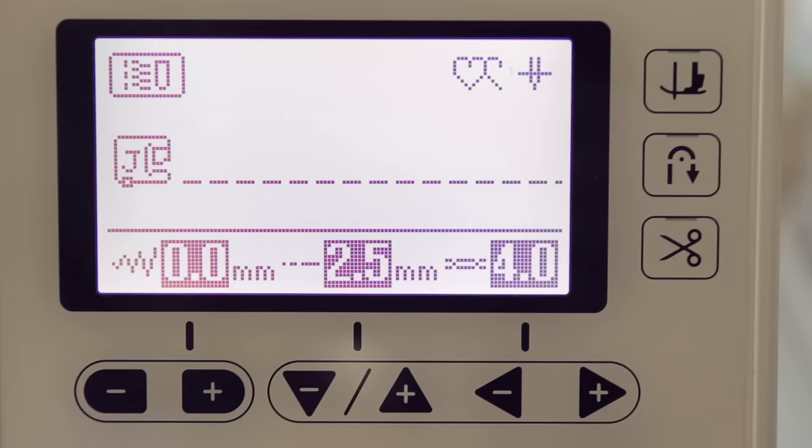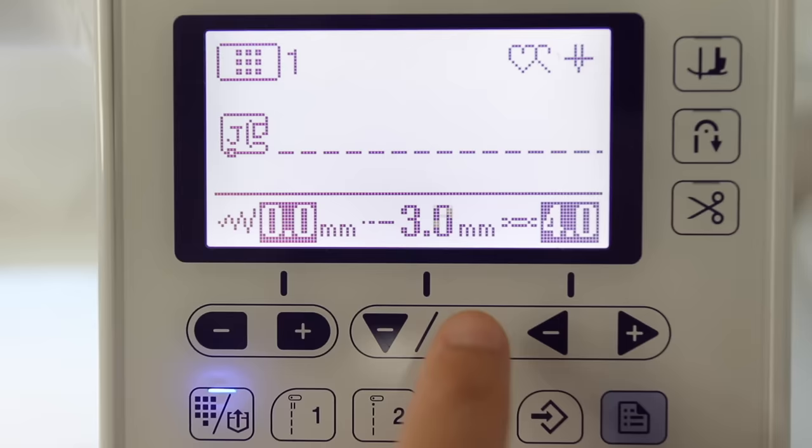My stitch setting is at its default straight stitch and my machine automatically resets this straight stitch every time I turn it on.